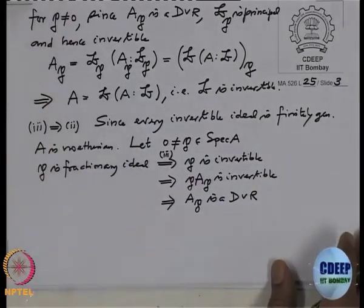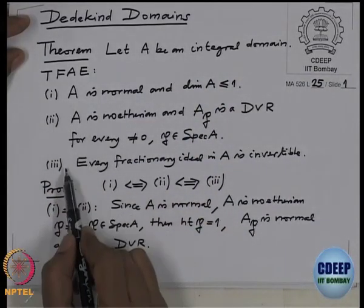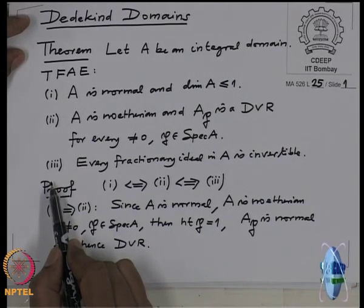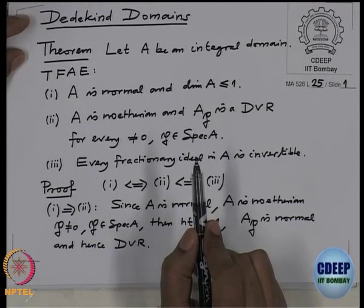And that finishes the proof of this theorem. Now we want to prove that these three conditions, in addition, are equivalent to a fourth: every ideal is a product of prime ideals, and this decomposition is unique. This generalizes the standard theorem on prime factorization for the ring of integers.